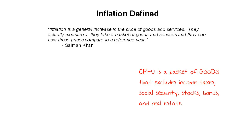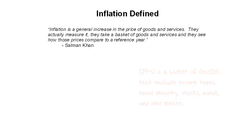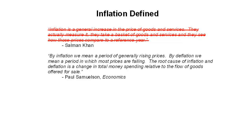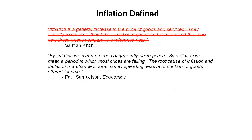The CPI is one measure to give some indication of how much inflation is taking place. A different definition of inflation is provided by Paul Samuelson in his textbook Economics, where he says: 'By inflation we mean a period of generally rising prices. By deflation we mean a period in which most prices are falling. The root cause of inflation and deflation is a change in total money spending relative to the flow of goods offered for sale.' You can see where Khan got his idea from — Samuelson is the guy who provided mainstream economics with most of its applied Keynesianism.